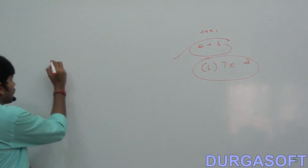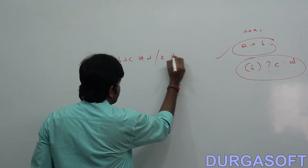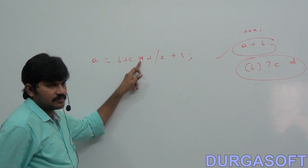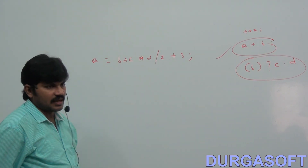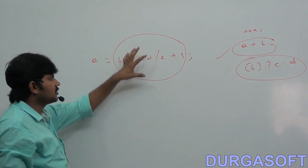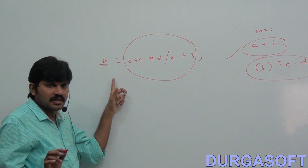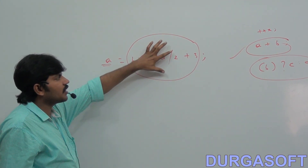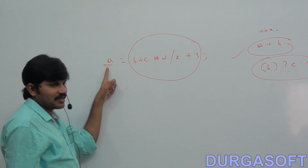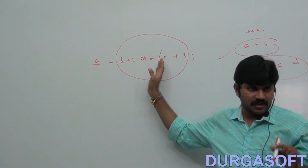One important conclusion: suppose a equals p plus c into d divided by 2 plus 3. Which thing will be evaluated first? First multiplication, then division, then plus, then plus. After evaluating all operators, at last this result will be assigned to A. That's why, after completing all operators, the last thing we perform is the assignment operator. In any programming language, least priority goes to the assignment operator.